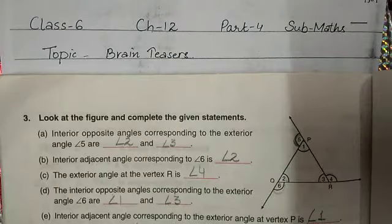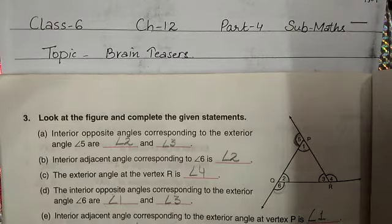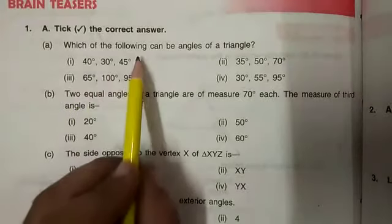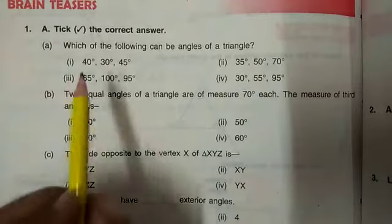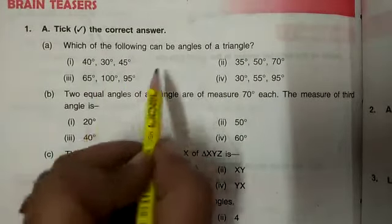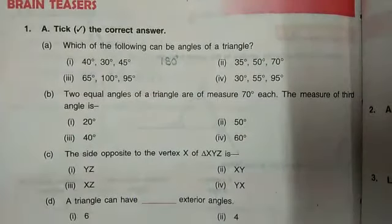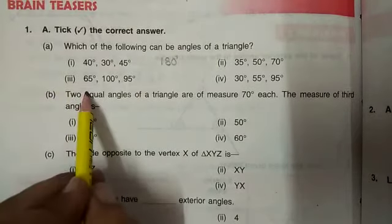Hello students, today we are going to discuss brain teasers of chapter 12. Question number 1: Which of the following can be angles of a triangle? We will add all these angles and check if the sum is equal to 180 degrees. Then we will say these can be angles of a triangle. You will do this question yourself.